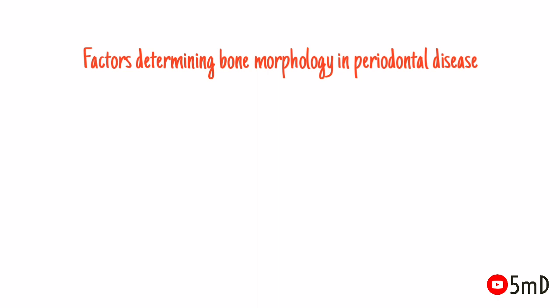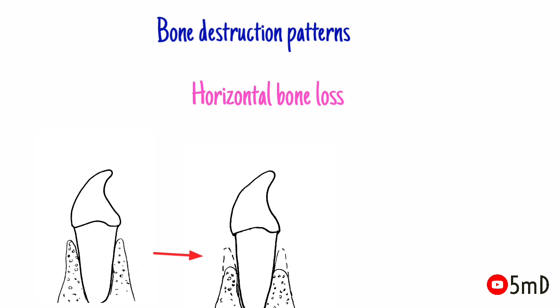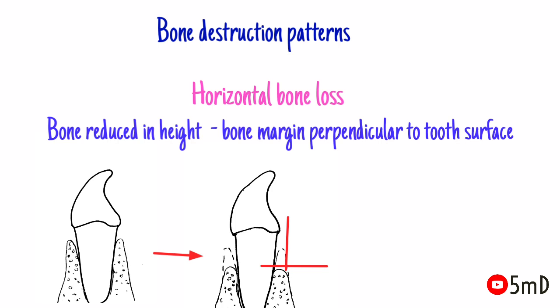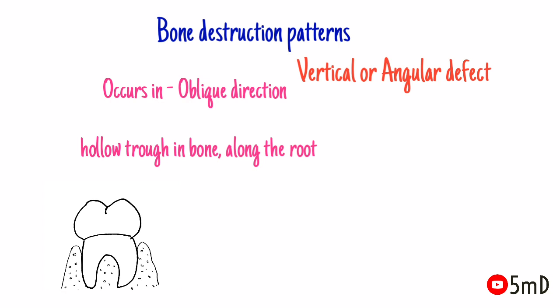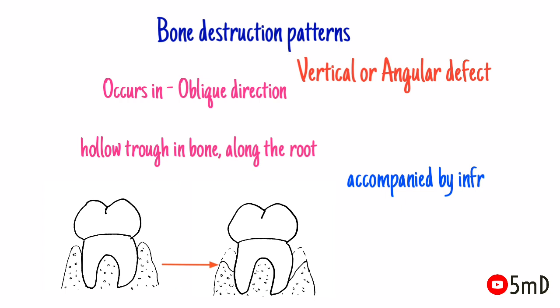Now let us see the possible bone destruction patterns in periodontal disease. The most common pattern is horizontal bone loss, where the bone is reduced in height but the bone margin remains perpendicular to the tooth surface. Next is the vertical or angular defect, which as the name suggests occurs in an oblique direction, leaving a hollow trough in the bone along the root, usually accompanied by infrabony pockets.